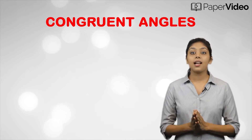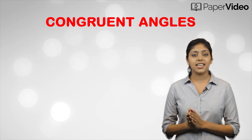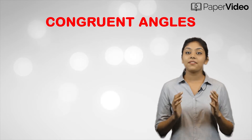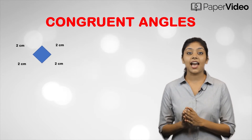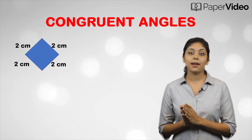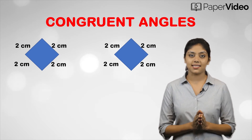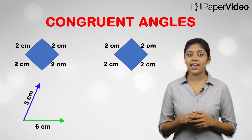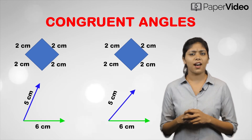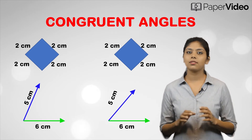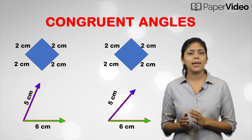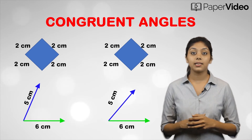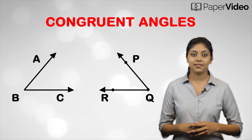Congruent angles. When do we say two angles are congruent? We know that congruent figures have the same shape and same size. Does that mean congruent angles must have the same length of arms? No. Then what will make two angles congruent? The answer is their measures.